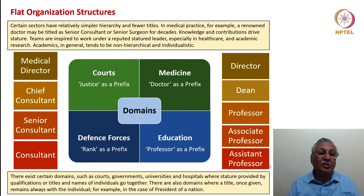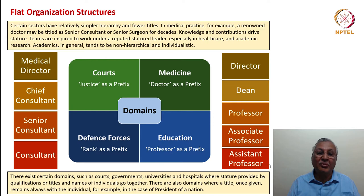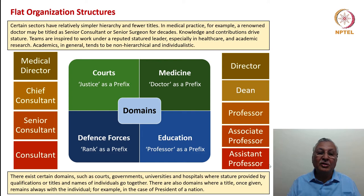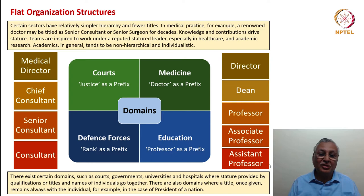A doctor or surgeon wouldn't mind that because there is a stature associated with the medical profession — the ability to cure patients — and that halo is independent of the title. Similarly, in the academic world we do not have many titles: assistant professor, associate professor, professor, dean, director — these are probably the five important titles. The academic world is also pretty non-hierarchical and individualistic; laboratories are associated with lead researchers. In courts, 'justice' is a standard prefix; in medicine, 'doctor' is a standard prefix; in defense forces, people are referred to along with their rank as a prefix; and in education, 'professor' is a prefix.